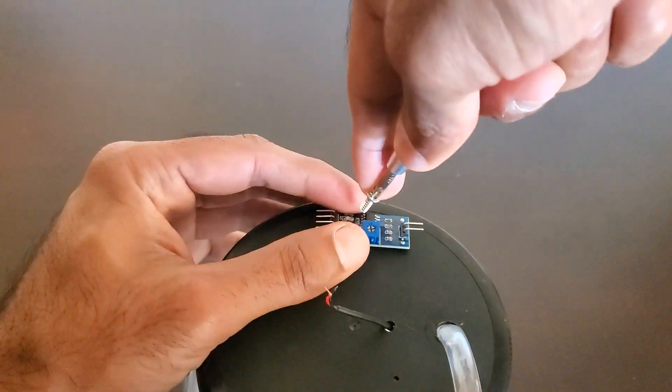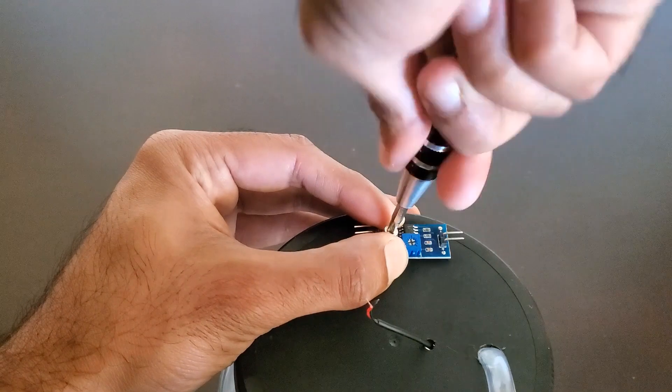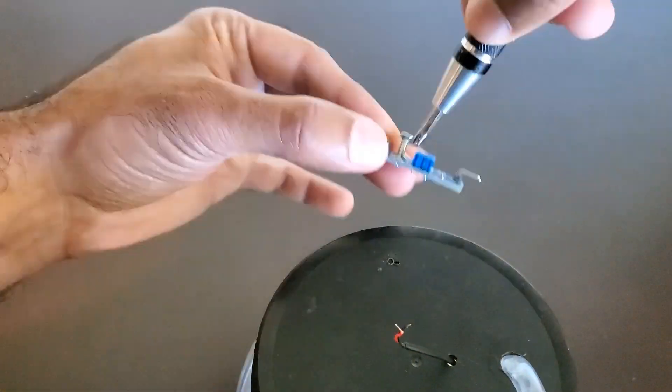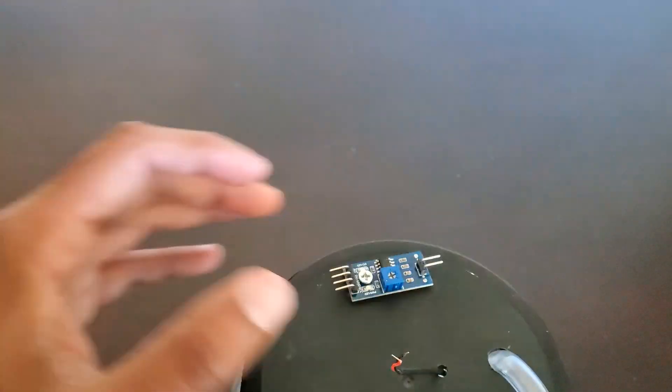Use screws to mount the PCB portion of the soil sensor to the lid and the 5 volt relay module to the lid as well.